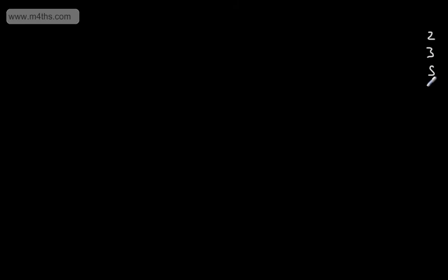I'm going to start off on the right-hand side by listing the first few prime numbers: 2 is the first, then we have 3, 5, 7, 11, 13. If we get going, we'd have 17, 19, and so on and so forth. We shouldn't need anything really that high with the numbers that we're dealing with.